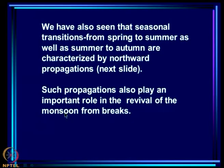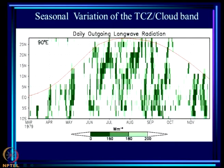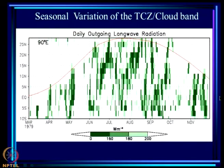We have also seen that seasonal transitions — that is, spring to summer as well as summer to autumn — are characterized by northward propagations. The seasonal transition from spring to summer is characterized by northward propagations, and the post-monsoon seasonal transition from the summer monsoon to fall is also characterized by northward propagation.